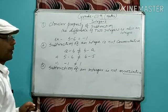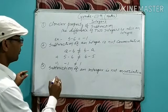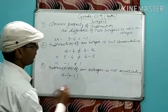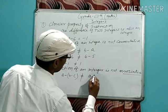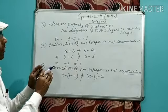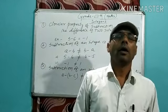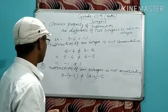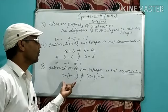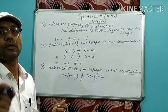Suppose there are three integers a, b, and c. Then a minus (b minus c) is not equal to (a minus b) minus c. Subtraction of integers is not associative. If we change the grouping of the integers, then the result will not be the same — it means the result will change.